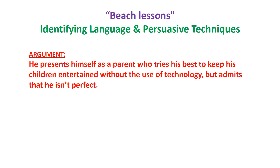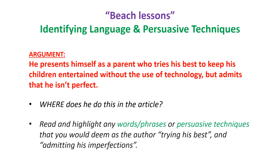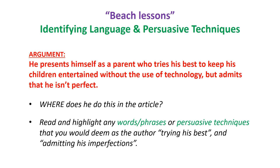He admits that he isn't perfect. What we need to do now is identify the language and persuasive techniques that actually support this argument. To do that, we need to think about where he actually does this in the article — where he presents himself as someone trying his best and when he admits his imperfections. That's why we're looking for specific language and persuasive techniques that support those ideas.